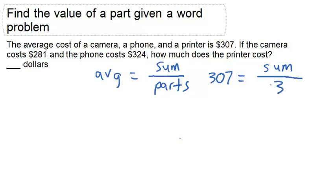We don't know what the sum is, we only know what two of them cost, but we do know that there are three parts. There's a printer, a phone, and a camera.